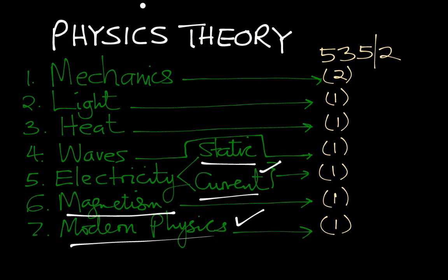For physics theory, paper one 535/1 consists of 40 multiple choice questions that are chosen from the seven branches, so you have to be well acquainted with physics. Paper two is set in this way: a standard paper will have two numbers from mechanics, and then the rest of the areas will have one number. Paper two, 535/2, is the most failed paper in Uganda for physics.